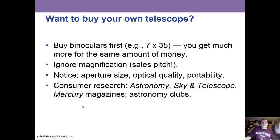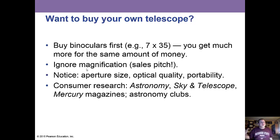If you want to own your own telescope, we recommend first buying binoculars — usually 7 by 35 — you get much more for the same amount of money. Ignore the magnification; that's a sales pitch. Same with buying a telescope — they'll say it can magnify 700 times, but it doesn't really work that way. What you want to look at is the aperture size — is it an 8-inch or 4-inch telescope — the optical quality, and portability. There are magazines like Astronomy, Sky and Telescope, and Mercury, plus astronomy clubs — there are two in Springfield.